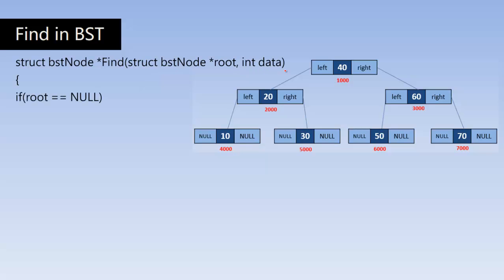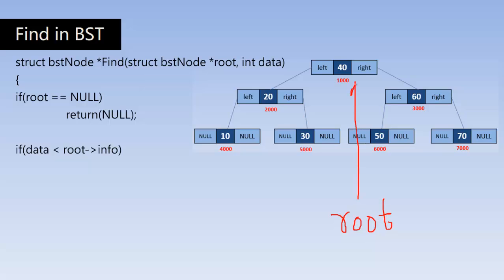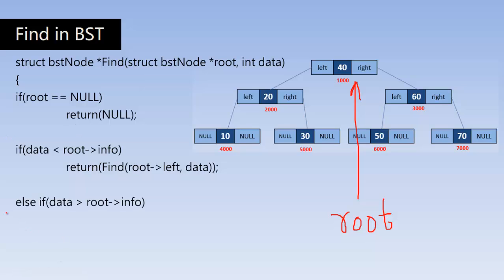Root is a pointer which stores the address of the root node. If root equals null, return null — that means there is no tree. If that doesn't happen, we check data with root's info. Say root is pointing to the root node and our data is 50 — we are searching for 50. Is 50 less than root info? No, it is not. Then we check the next condition: is 50 more than root info? Yes, 50 is more than 40.